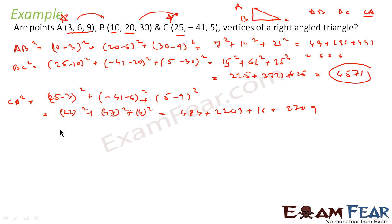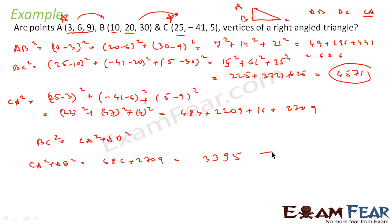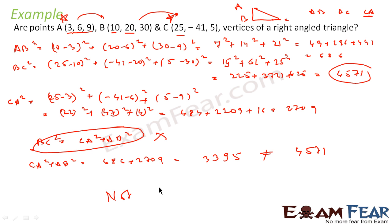Now let us take the biggest one, which is BC². If we can prove that BC² equals CA² plus AB², then we can prove it is a right triangle. CA² plus AB² gives 686 plus 2709, which is not equal to 4751. So this equation is not valid, and therefore it is not a right triangle. That is our answer.